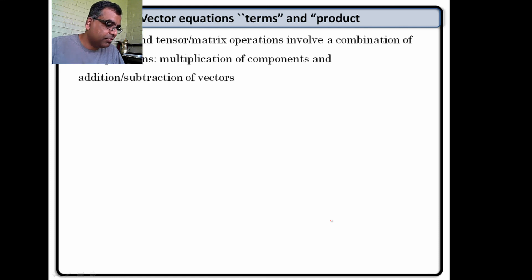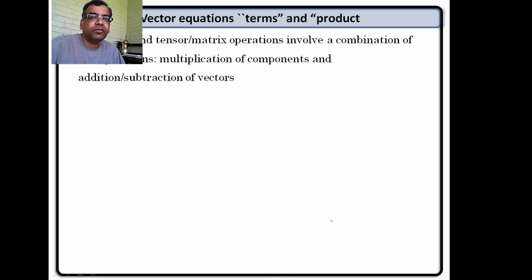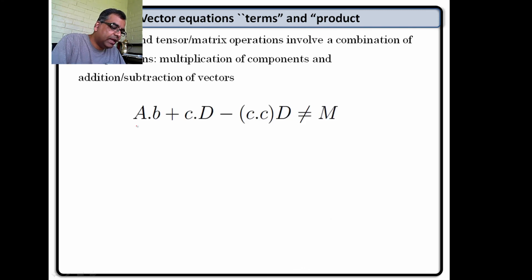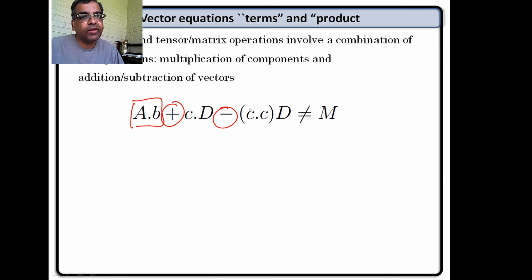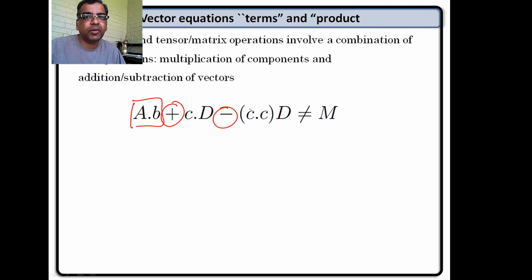The first step is the following. All our vector and matrix operations involve either sums or products — things like A times B, C times D, some combination of sums and products. There will never be division in vector algebra. There is only addition, subtraction, multiplication. So that is what we are going to use.